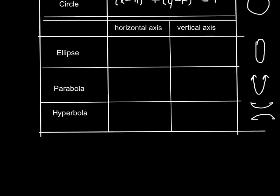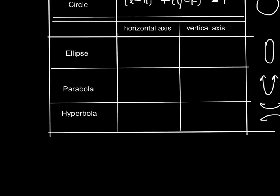Moving on to our ellipse, parabola, and hyperbola, each have a horizontal axis and vertical axis.